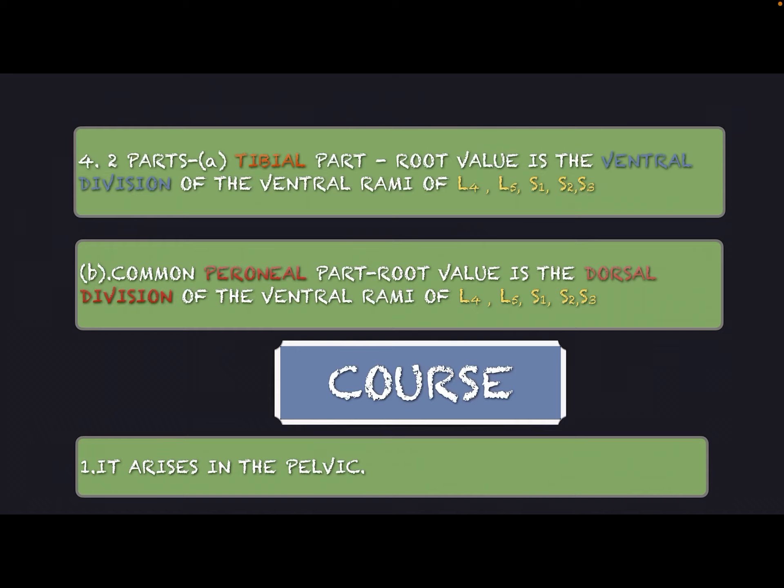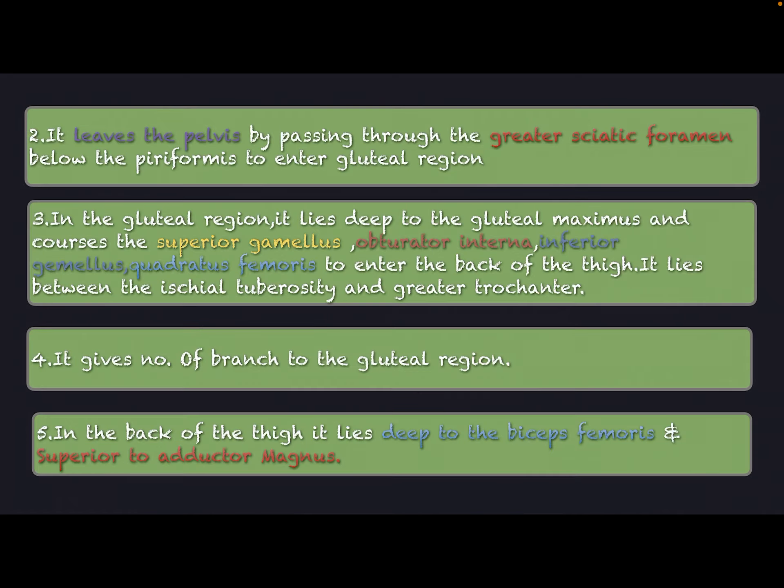Course: The sciatic nerve arises in the pelvic region. It leaves the pelvis by passing through the greater sciatic foramen, below the piriformis, to enter the gluteal region.